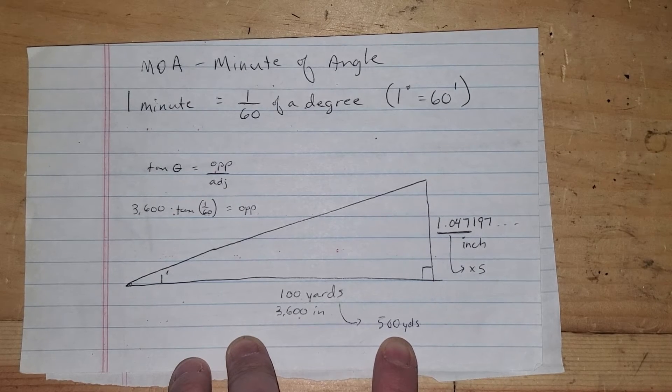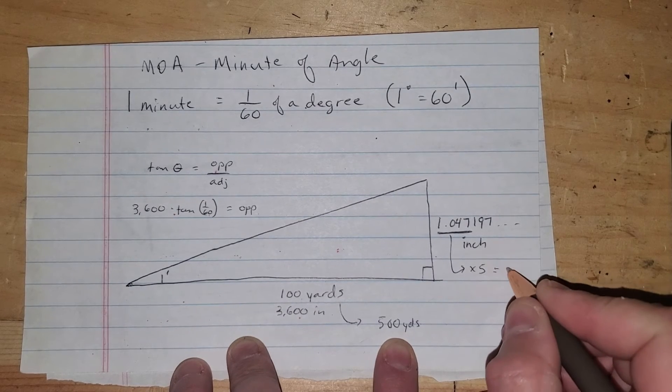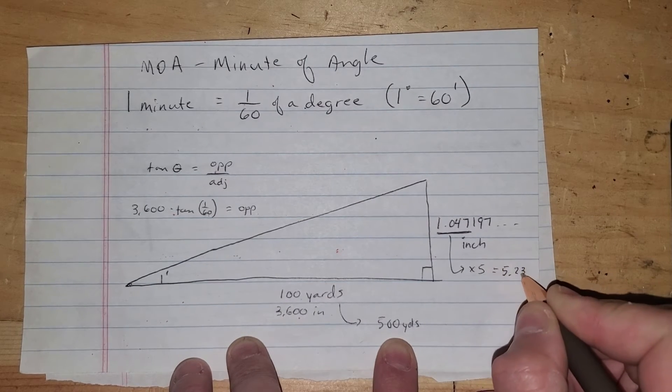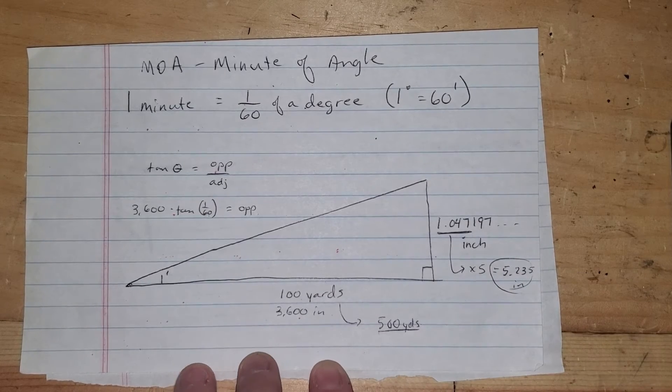So it'd be 1.047 times five, which would be 5.235 inches at 500 yards.